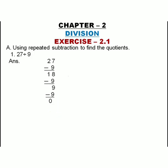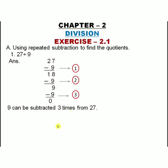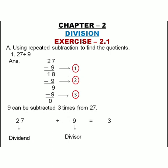How many times can 9 be subtracted from 27? 1, 2, 3 — 3 times. 9 can be subtracted 3 times from 27, so 27 divided by 9 is equal to 3. Here, 27 is dividend — the number to be divided. 9 is divisor — the number by which to divide. The answer, 3, is the quotient.